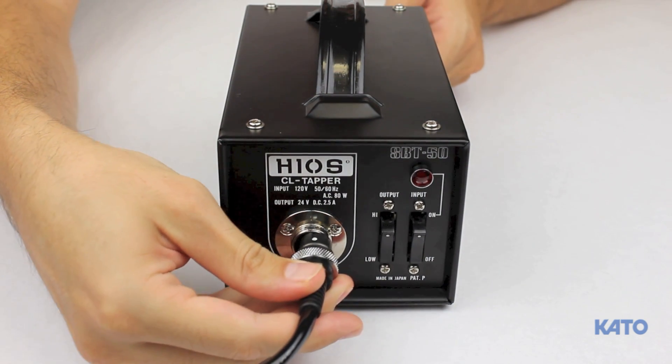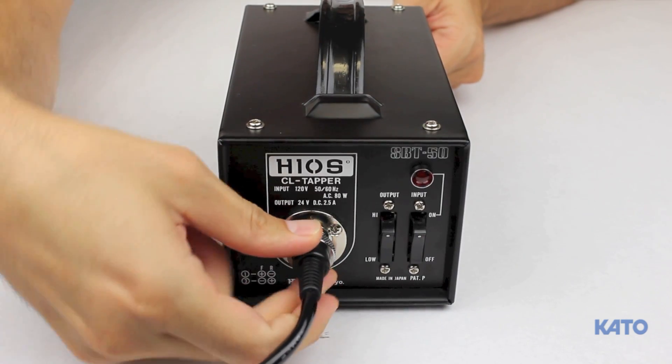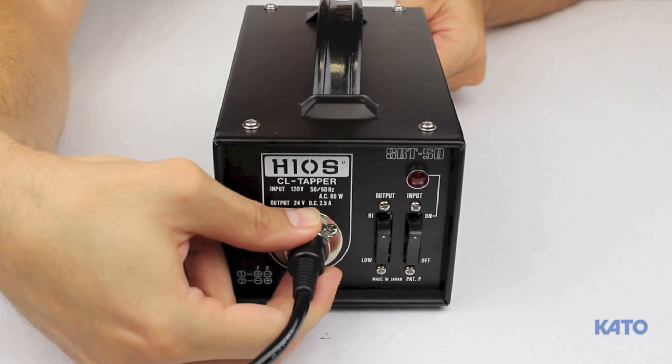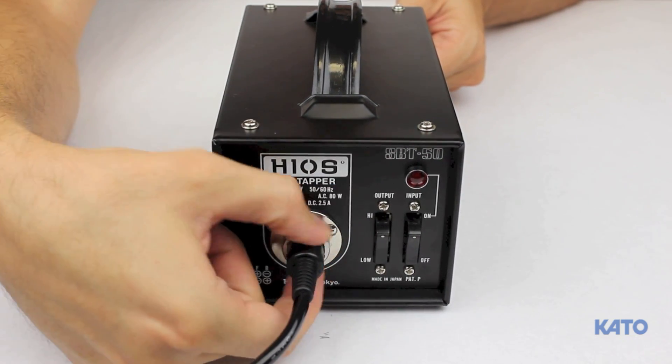Turn the cable so that the white indicator dot is facing up. This will be the proper orientation. Turn the knurled collar to secure the cable in place.